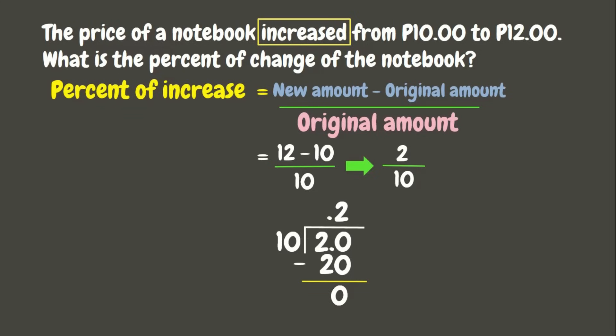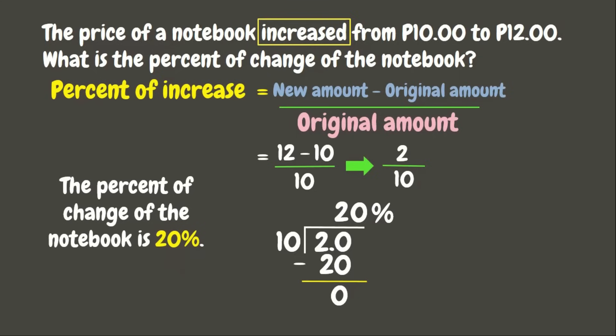Since we are looking for the percent, we need to change the decimal into percent. Let's move the decimal point 2 times to the right — 1, 2 — and put 0 in the empty place value, then change the decimal point into a percent sign. Our final answer is 20%. This means that the percent of change of the notebook is 20%.